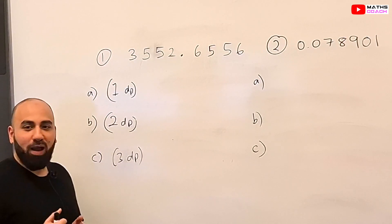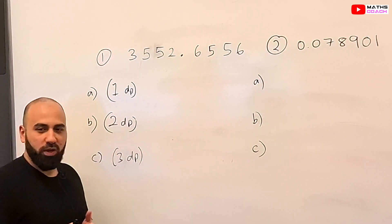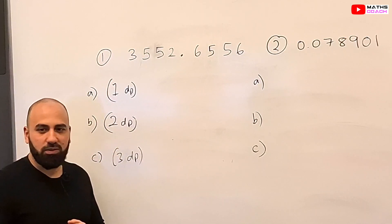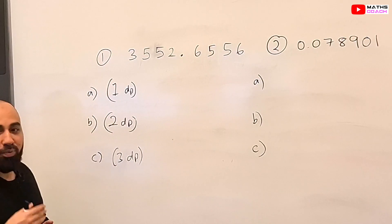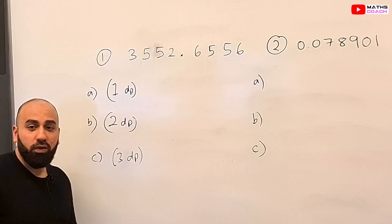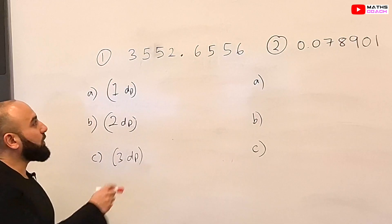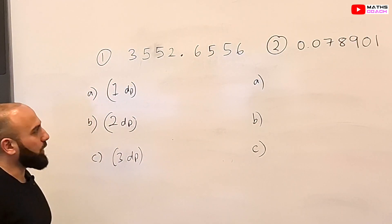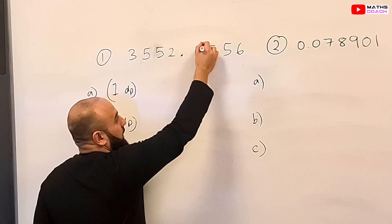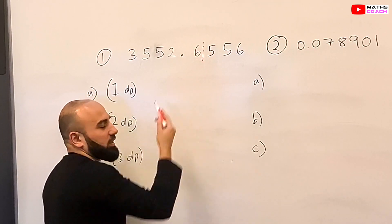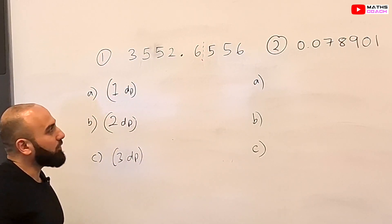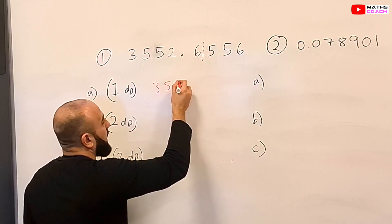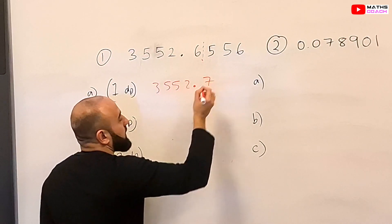Now that you know how to round numbers to decimal places, have a go at these questions — rounding to one decimal place, two decimal places, and three decimal places. Pause the video and then press play for the answers. Let's go through the first question: we want to round 3552.6556 to one decimal place. We draw a line after the first number after the decimal point and look at the number next to it. Because it's 5 and above, we round this to a 7, so our number is 3552.7.